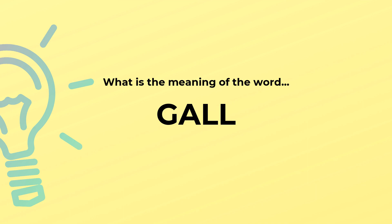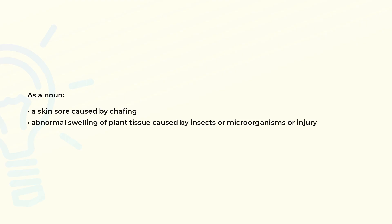What is the meaning of the word gall? As a noun: a skin sore caused by chafing; or abnormal swelling of plant tissue caused by insects, microorganisms, or injury.